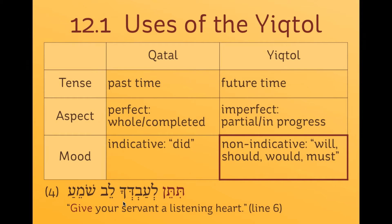You can also use the yiktol to make a command or give a request. Solomon responds to God saying 'Ti ten le'av decha, lev shomea,' where he doesn't respond with an imperative 'ten,' but uses the yiktol form 'ti ten.' You can think of it as a more polite way of making a request — not so sharp and abrupt as giving an imperative. This is especially fitting here, where Solomon is making a request of the king of the universe. Solomon also calls himself 'your servant,' referring to himself in the third person to make himself low. So he uses the yiktol rather than the imperative for making a polite request.